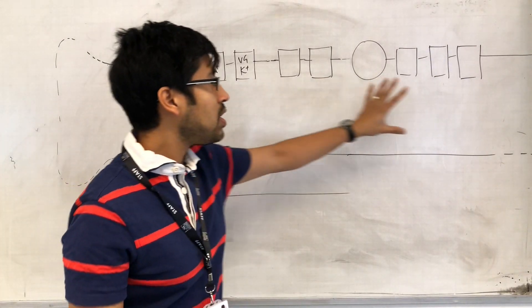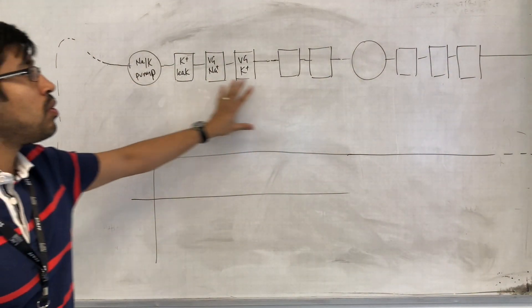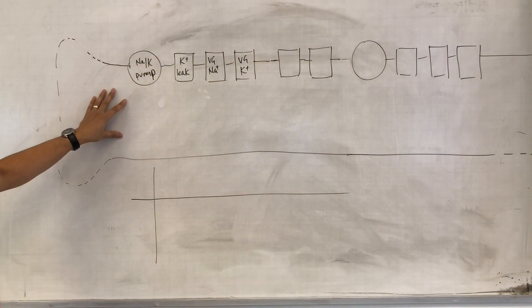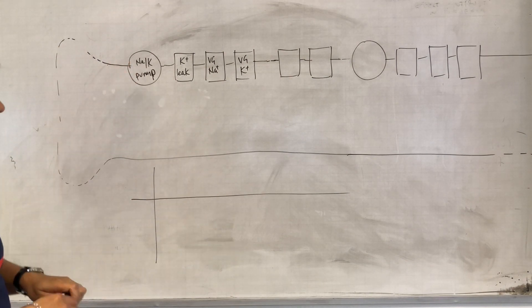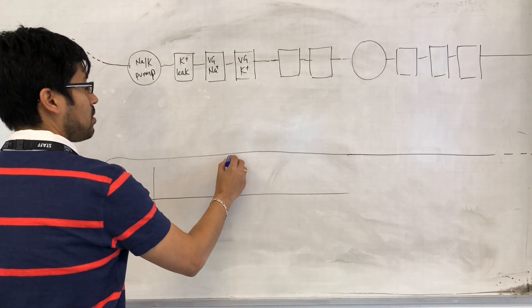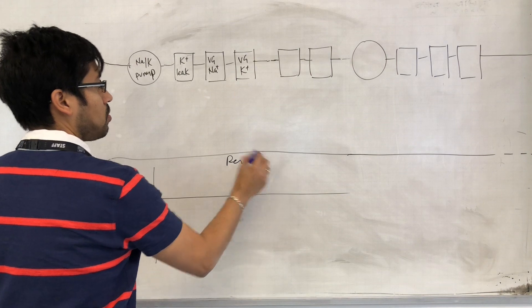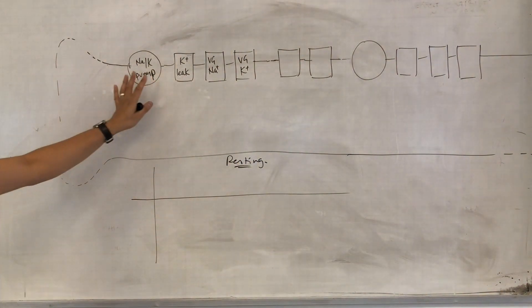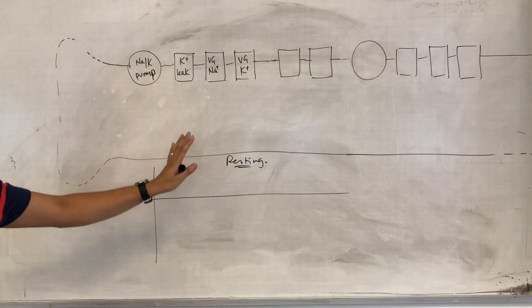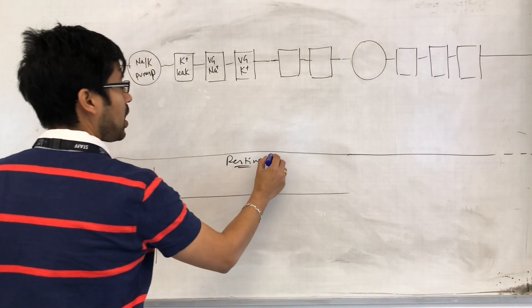Okay, so we are now looking at the axon of a neuron, and what we are going to look at first is what's the situation in the neuron when it is at rest. We're going to look at the resting potential.